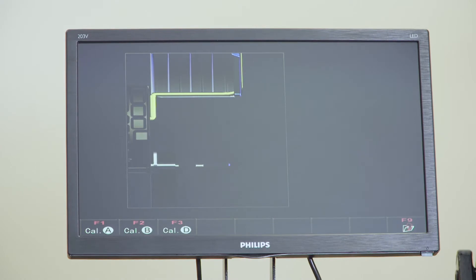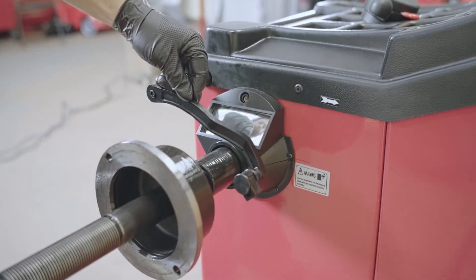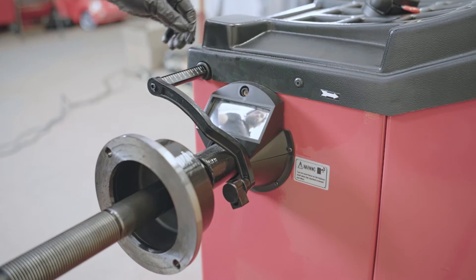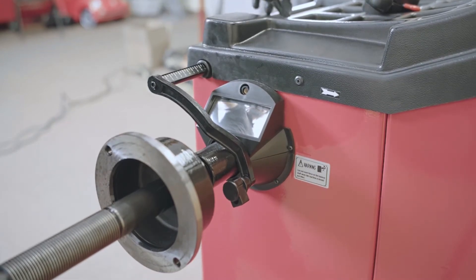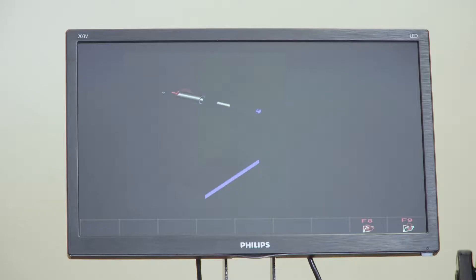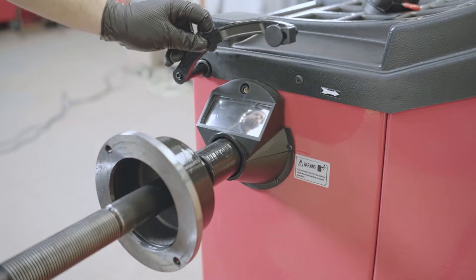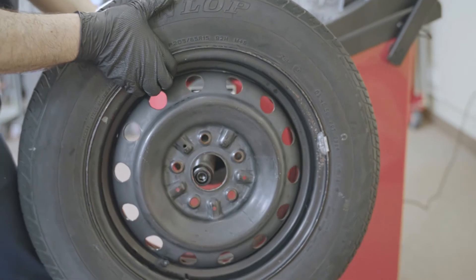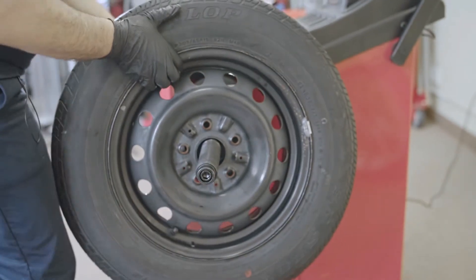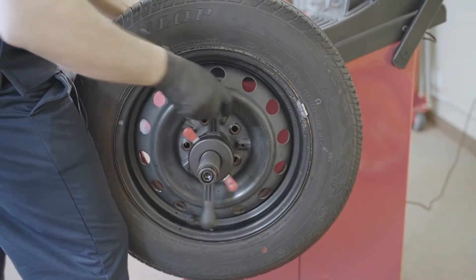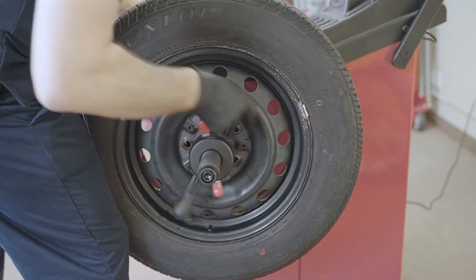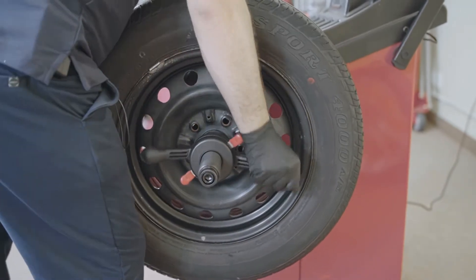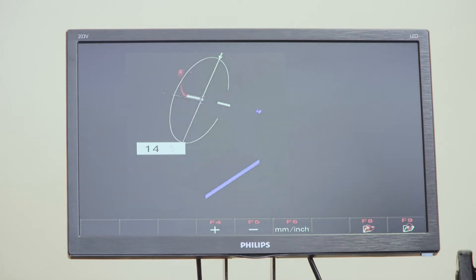Then we're going to go with F3 diameter. You're going to take the distance ruler and rest it here on the shaft. Then hit F8 to confirm. Get a 14 inch or 15 inch rim. You can adjust it. Here we have a 15 inch rim, so we're going to adjust it to 15.